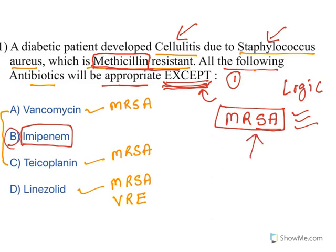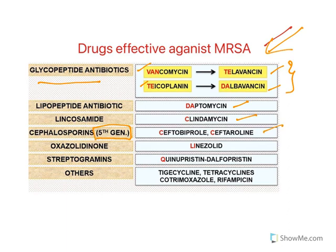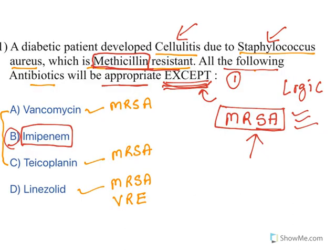You need to know various drugs effective against MRSA. Glycopeptide antibiotics: vancomycin, teicoplanin, telavancin, dalbavancin — all very effective. Lipopeptide antibiotic: daptomycin. Lincosamide: clindamycin. For cephalosporins, only fifth generation are effective. Oxazolidinone: linezolid. Streptogrammins: quinupristin-dalfopristin are also effective. Remember, linezolid and quinupristin-dalfopristin are also effective against vancomycin resistant Enterococci. Take a screenshot of this list. You need to know all drugs effective against MRSA to eliminate the wrong one — that is why it is a logic based question.